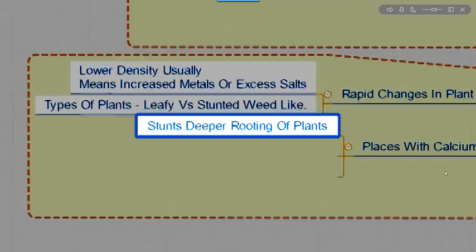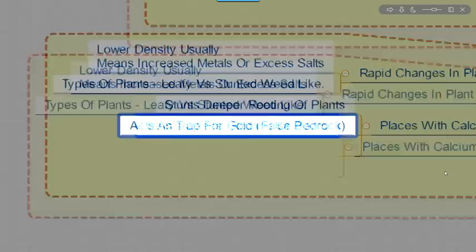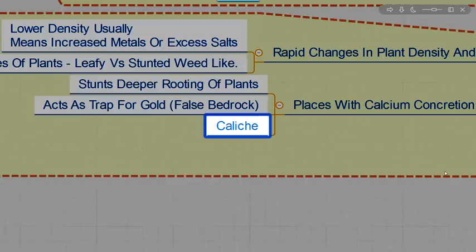Places that have calcium concentration layers. These are fun. It stunts the deeper rooting of plants because it forms a concrete. A false bedrock trap for gold. We call this caliche. And it basically is a very good sign. And you want to look just above the caliche layer.